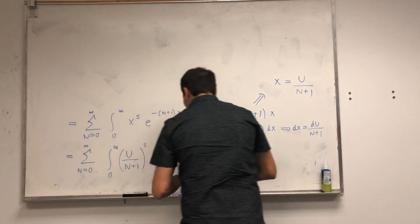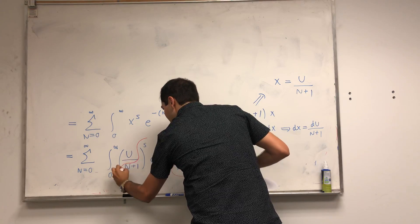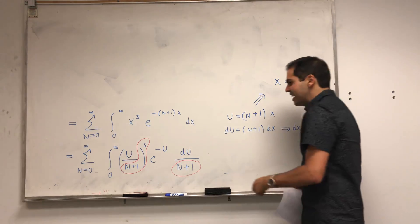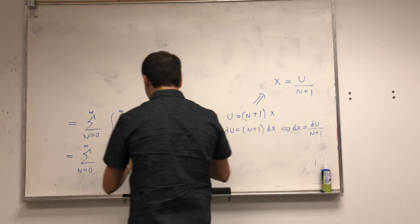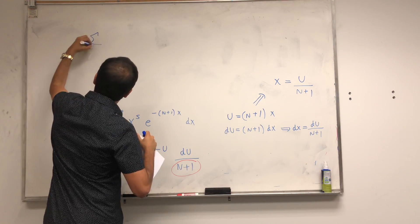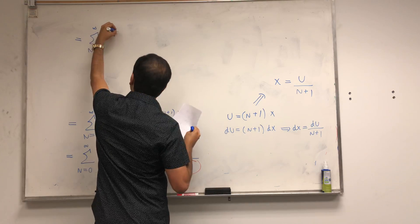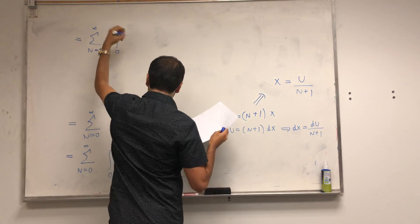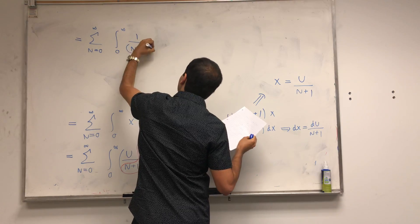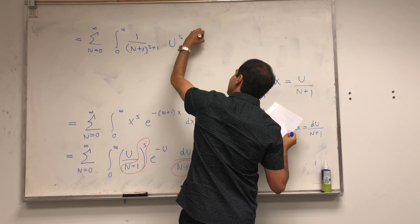So what we're left with is the following. So we have one factor of n plus 1 here. And we have s factors of n plus 1 here. So if you multiply them out, you really get s plus 1 factors of n plus 1. So it is sum from n from 0 to infinity integral from 0 to infinity of 1 over n plus 1 to the s plus 1. And it's still u to the s, e to the minus u.